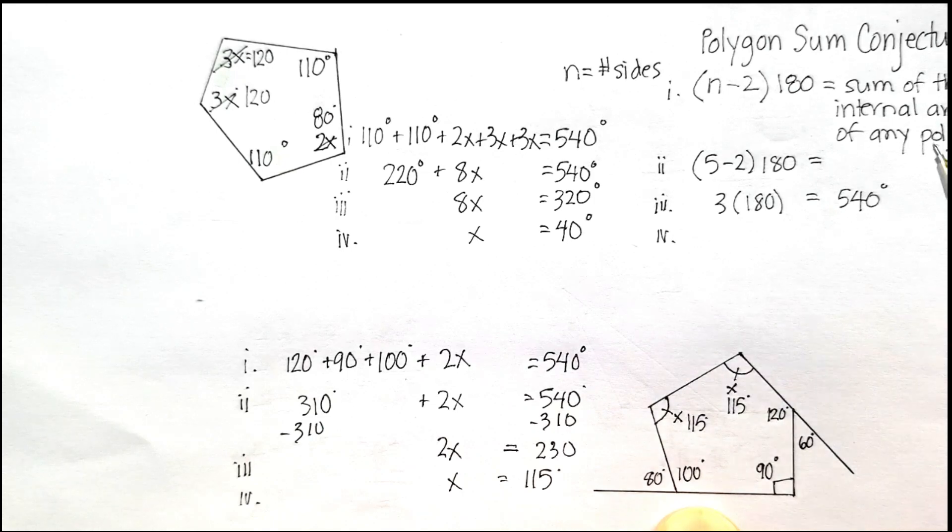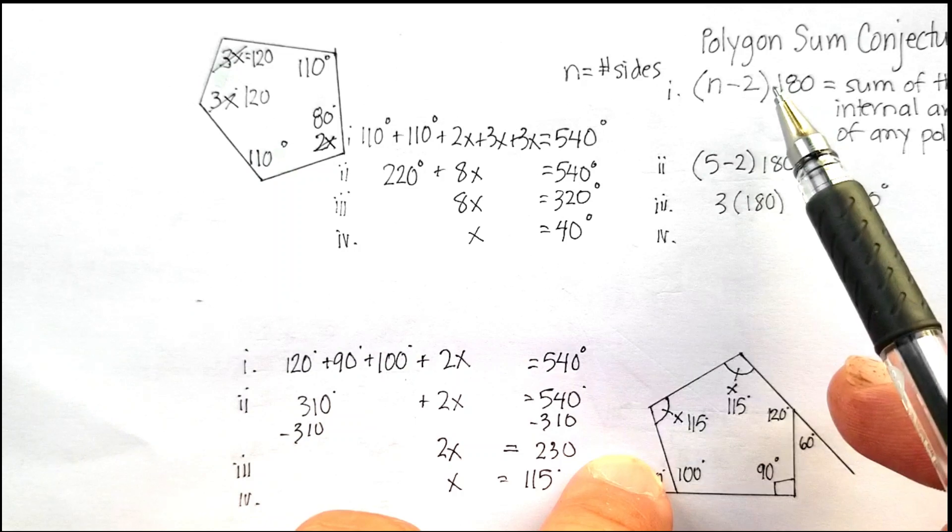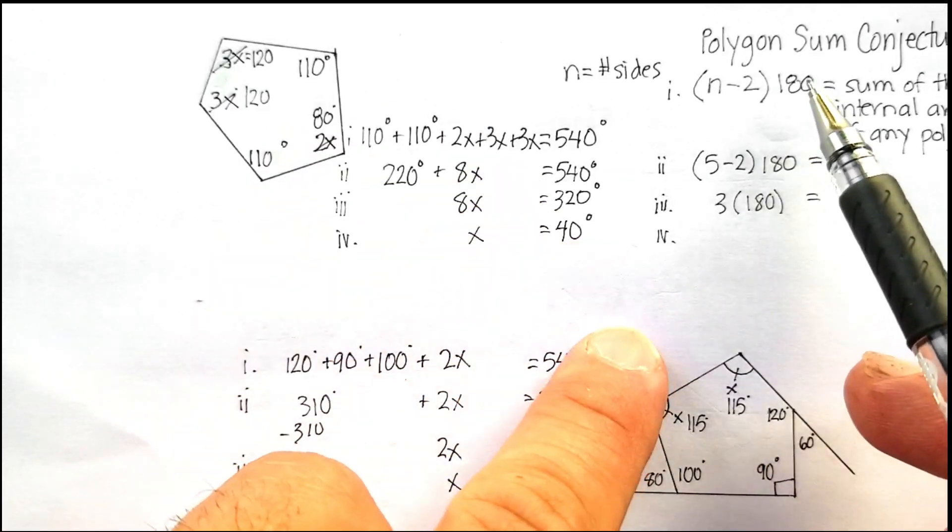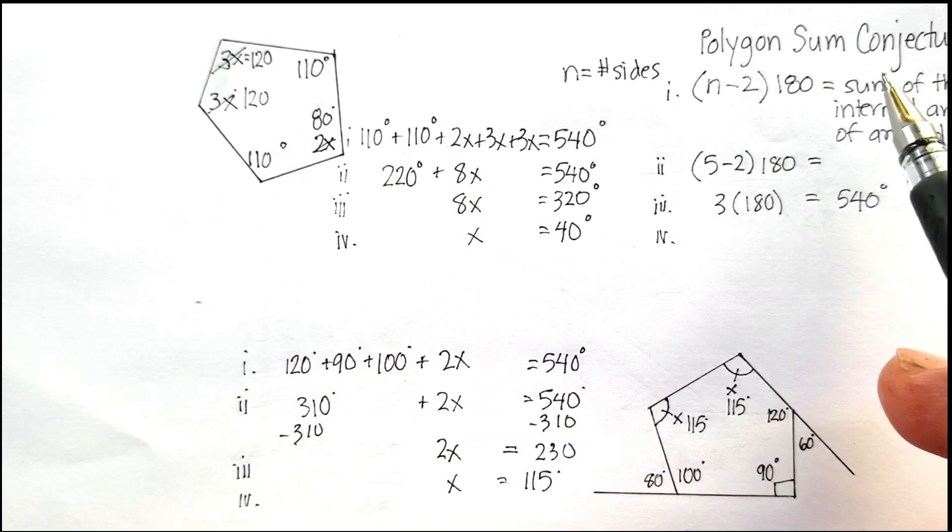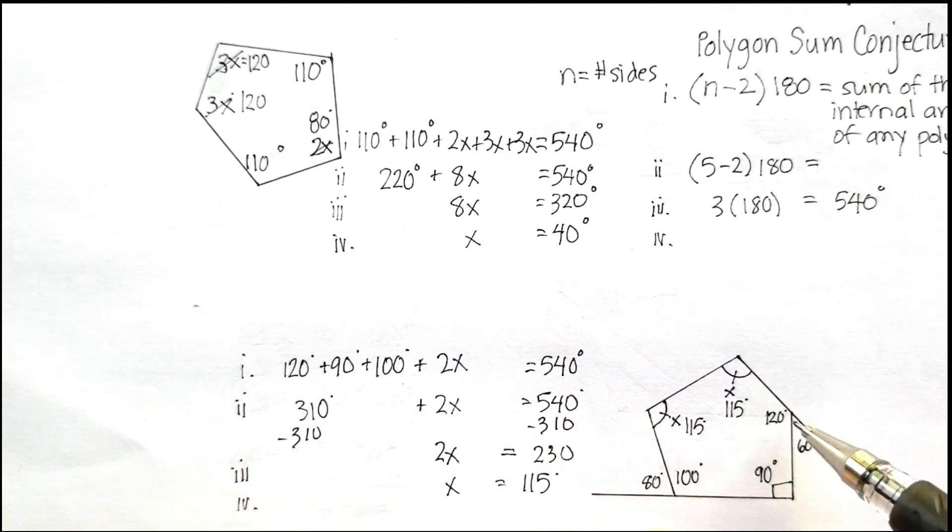I hope this was helpful. Use this polygon sum conjecture to figure out the internal angles of any size polygon, whether it's a 5, 6, 7, 8, 9, however many sides. And then go ahead and use any type of external angle, the 180 degrees, to figure out maybe some of the information that might be missing for you. I hope this was helpful to you.